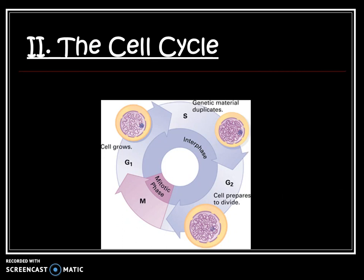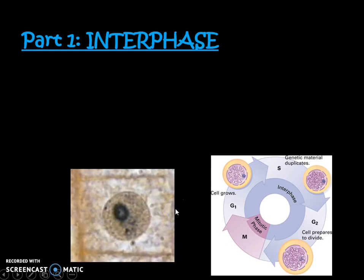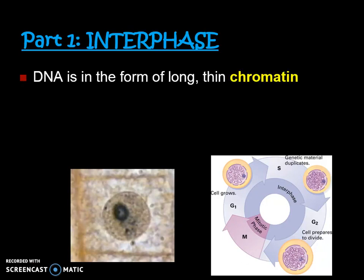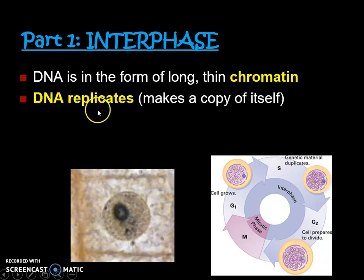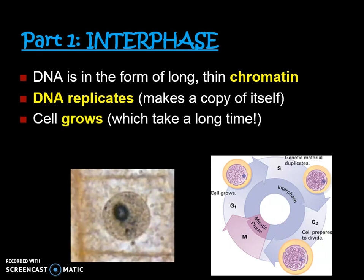Again, the cell cycle has interphase and then mitosis. We're going to revisit interphase for a moment. You have a chart that has interphase on it. In interphase, we can't see the X form of DNA, so that means it must be chromatin — it's too thin to see. Because we can't see any Xs, we know it's chromatin. In interphase, DNA also makes a copy of itself — DNA replication occurs — and the cell is growing, which takes a long, long time.